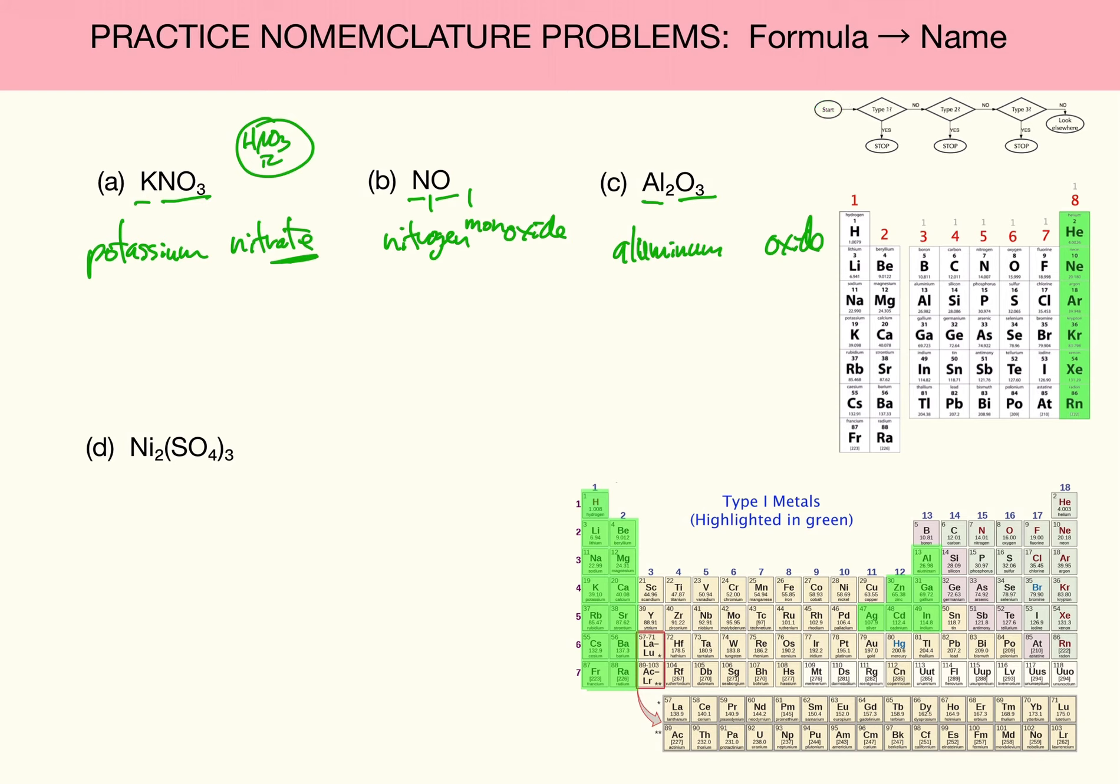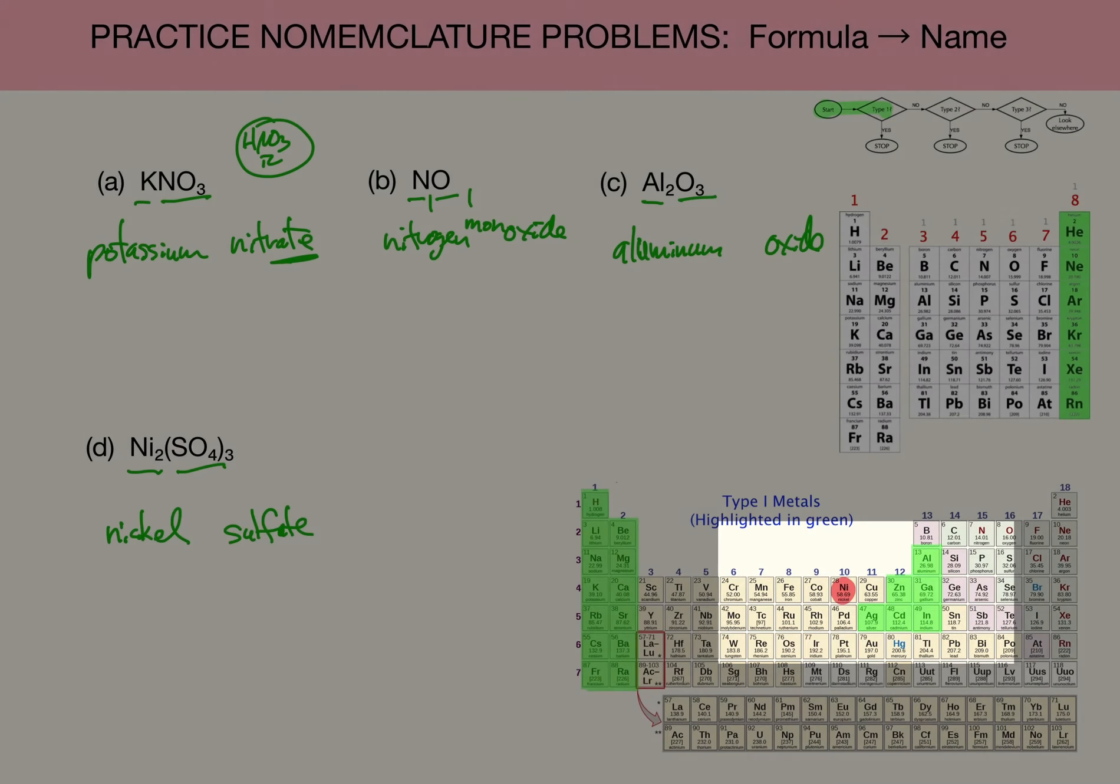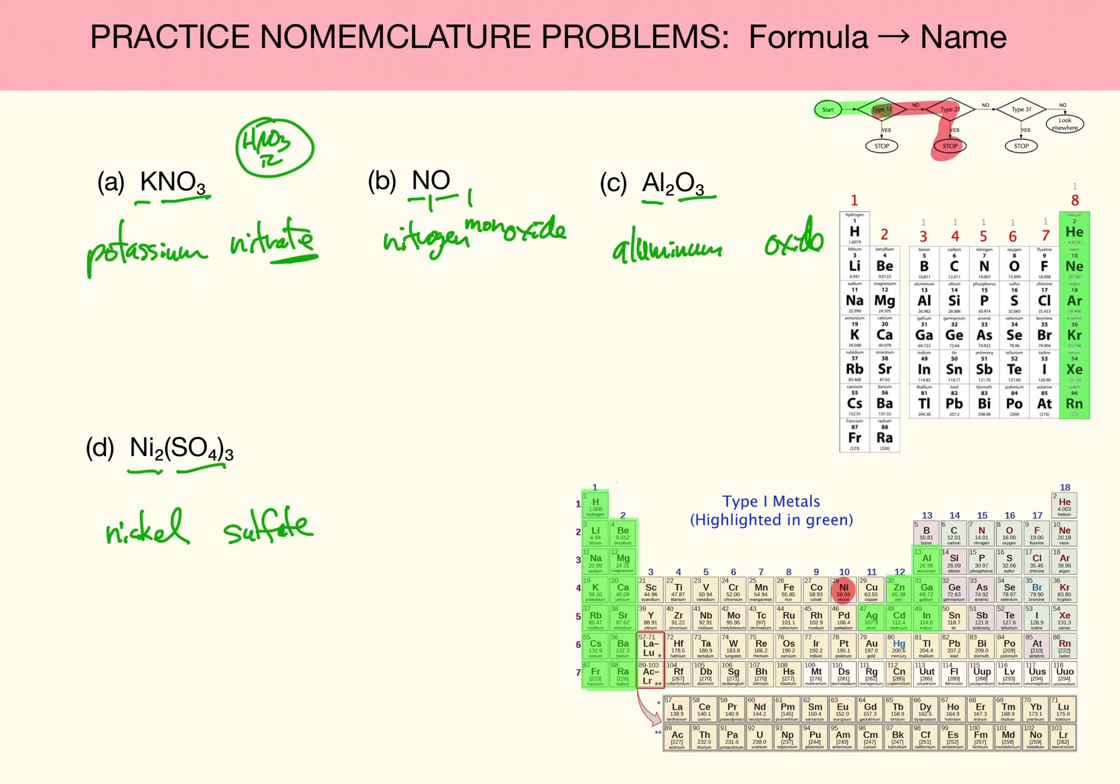And finally, Ni2(SO4)3. I do see that is binary. Let's name it nickel. SO4, I recognize that as being part of a polyatomic acid. And now that I think about it, it's sulfate. Because H2SO4 is sulfuric acid. So SO4 ion must be sulfate. I've named it as a type 1. And let's do our check. Is it a type 1 metal? Well, let's check and see. I see on the periodic chart that it is a type 2 metal. Therefore, I must provide a Roman numeral also.